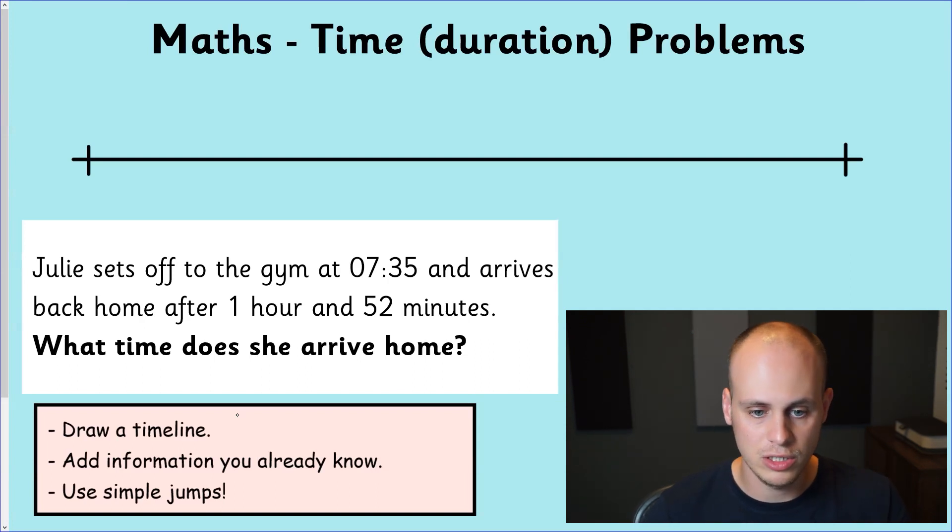Here's my first question. Julie sets off to the gym at 07:35 and arrives back home after one hour and 52 minutes. That's the information. The question is, what time does she arrive home? The first thing we need to do is comprehend the question. What are we given? Are we given a start time or an end time? Are we working forwards in time or backwards in time?